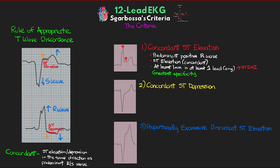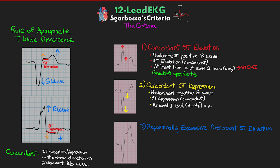Next, we look for any concordant ST depression. Here we have a predominantly negative S-wave, and we'd expect to see the J-point discordant to the S-wave and pulled towards the positive T-wave, giving us ST elevation. But instead we see concordant ST depression. If this concordant ST depression is present in at least one of the leads in V1 through V3 and it's at least one millimeter deep, then this is another indicator for STEMI.